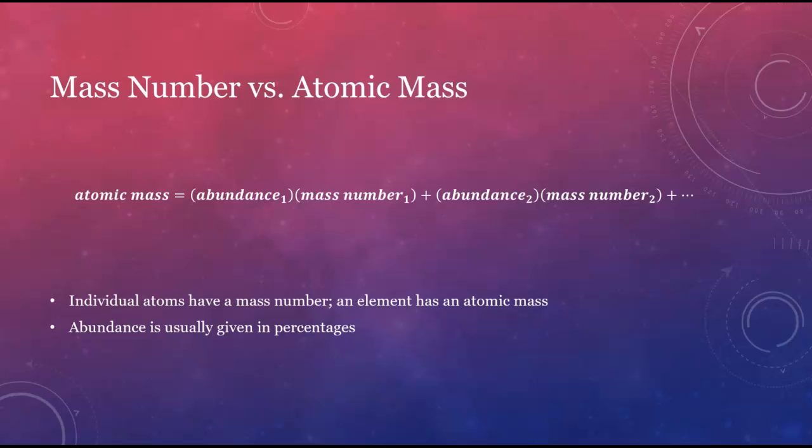The weighting factor is known as the relative abundance, which is usually given as a percentage. Relative abundance values are determined by sorting large samples of a given element into groups based on their mass numbers. These values are pretty constant across many large samples, which lets us assume that any sample of a given element will have the same isotope ratios.